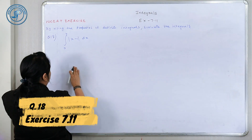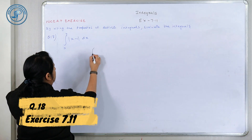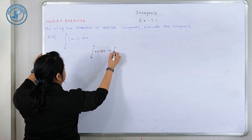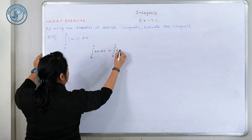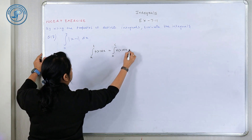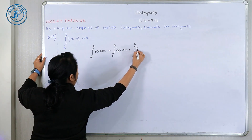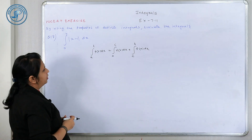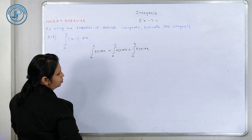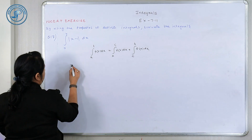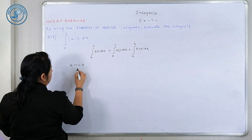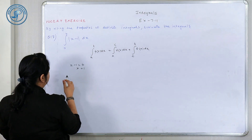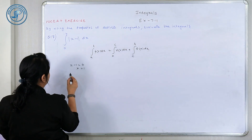Start करते हैं question 18। यहाँ हम property use करेंगे: A to B, F(X) DX = A to C, F(X) DX + C to B, F(X) DX, where C lies in between A and B। सबसे पहले इसके zeros निकाल लेते हैं — so X = 1।